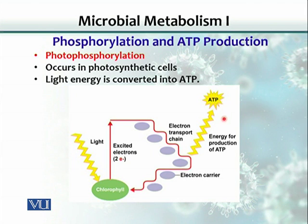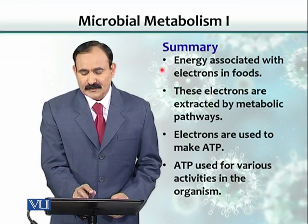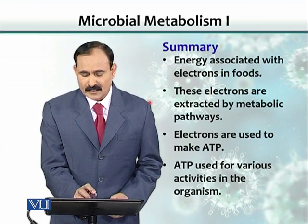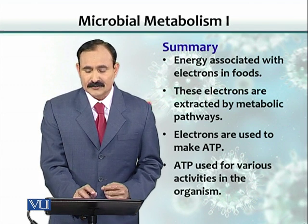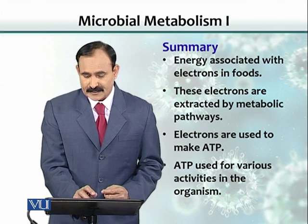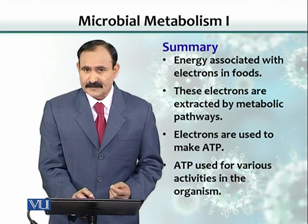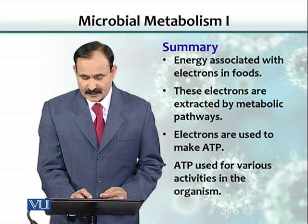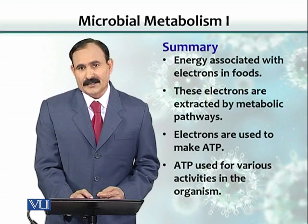This ATP is then used by plants and bacteria to synthesize nutrients. In summary, energy is associated with electrons in food. These electrons are extracted during metabolism through metabolic pathways, and it is the movement of these electrons that drives ATP formation. ATP is then used for various activities in the organism.